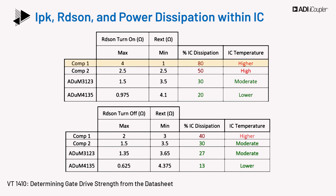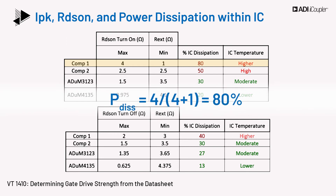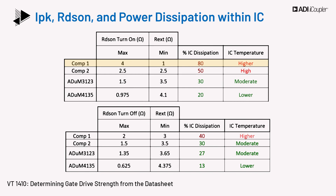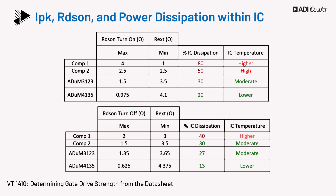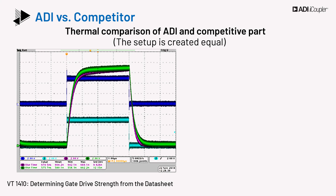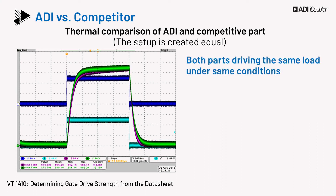For the turn-on case with competitor 1, P_dis = 4 / (4 + 1) = 80%. For the turn-off case with competitor 1, P_dis = 2 / (2 + 3) = 40%. Similar calculations can be made for other parts. As stated, the power dissipation within the IC needs to be as low as possible. This figure shows the gate voltage waveform with different parts driving the same load under the same conditions.